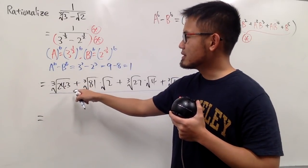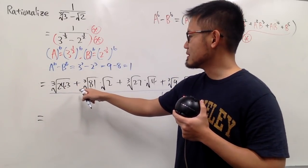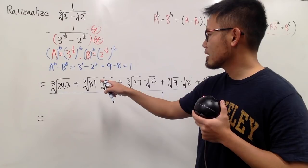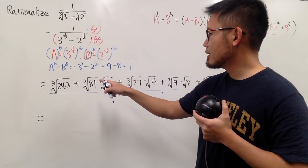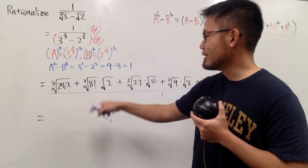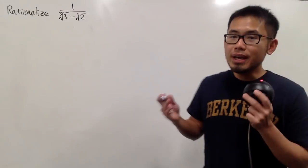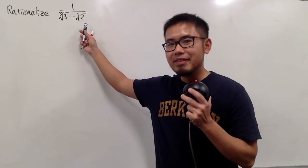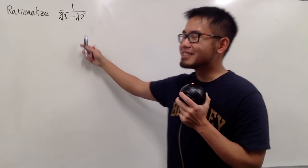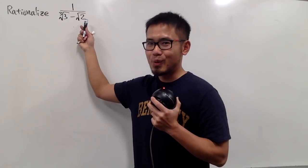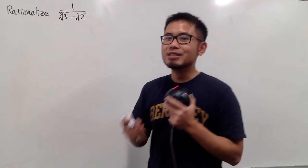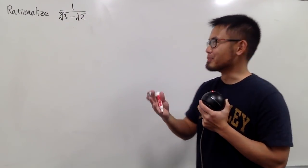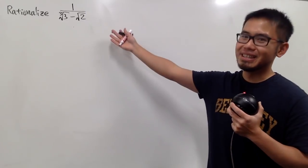We are going to rationalize the denominator for this right here. This time, notice that we have a cube root and also a square root. As always, you should pause the video and try this first.